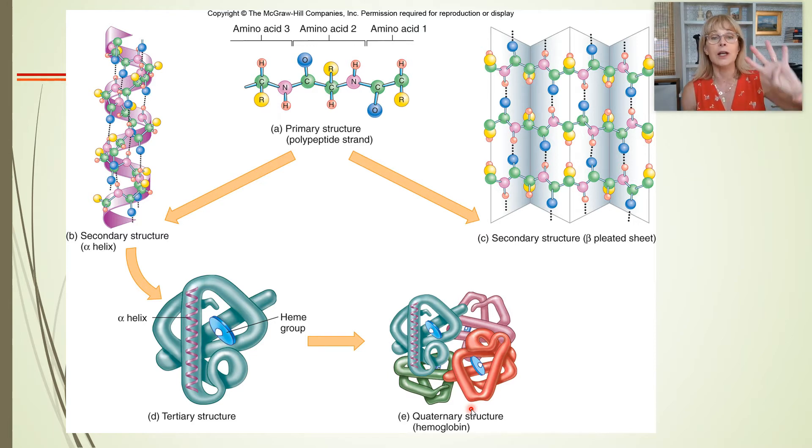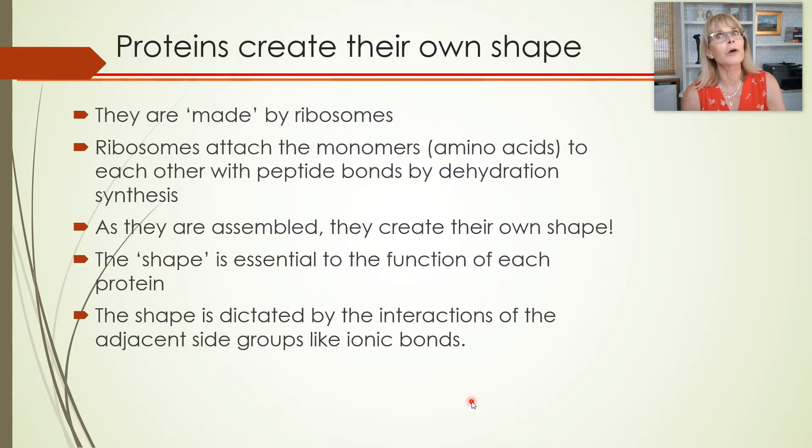And sometimes proteins get put together into larger structures. Now hemoglobin actually has got four subunits, but quaternary structure doesn't mean four subunits. Quaternary structure is like the fourth level of understanding protein structure. It just happens that hemoglobin has got four subunits.